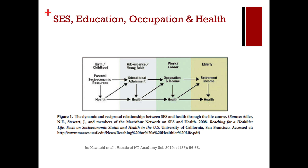This figure was developed by Kawachi and co-authors to look at the impact of socioeconomic status (SES), education, occupation, and health. It's referred to as a life course perspective — the idea that your parental socioeconomic resources are going to have an impact on your educational attainment, which has an impact on your occupation and income, and that occupation and income are going to have an impact on your retirement income.